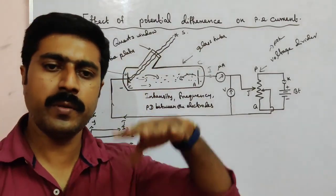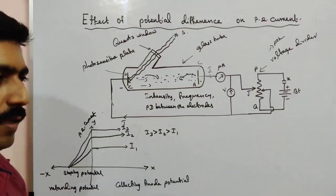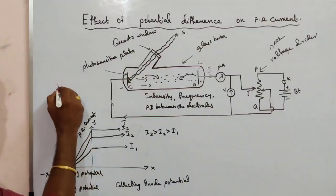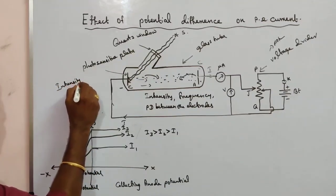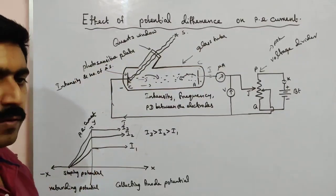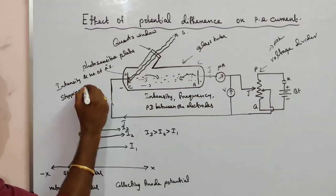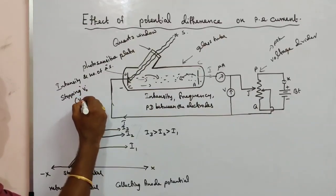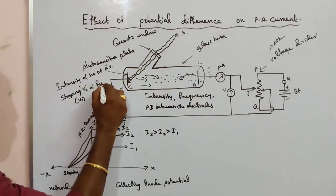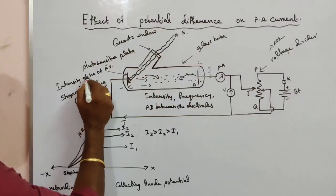For all intensities of incident radiation, the stopping potential does not depend on the intensity of incident radiation. Intensity of incident radiation is directly proportional to photoelectric current — more electrons emitted means higher current when intensity increases. But stopping potential V₀ is directly proportional to only the frequency of incident radiation, not the intensity.